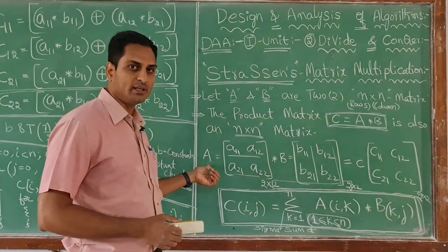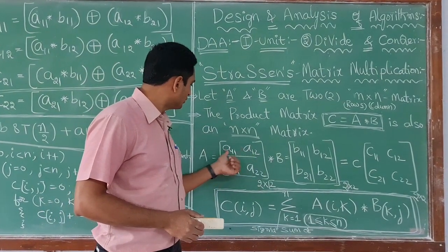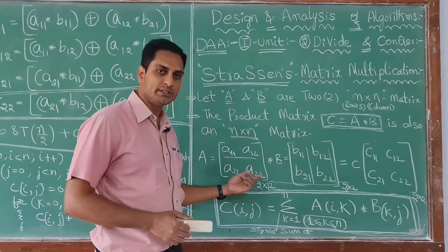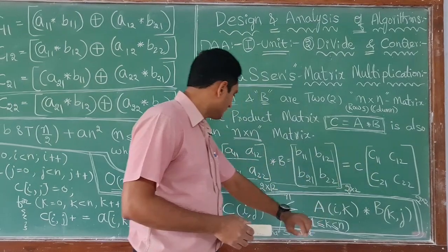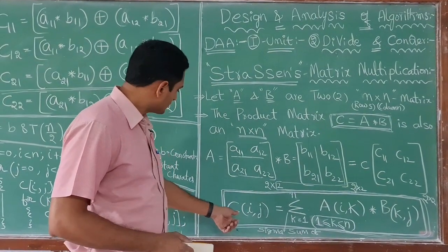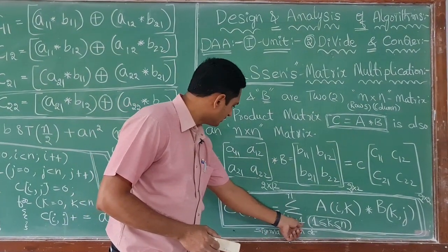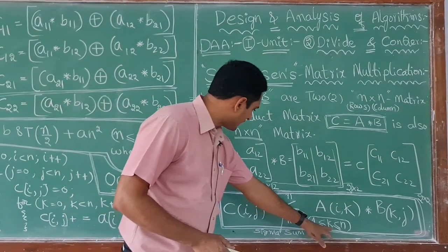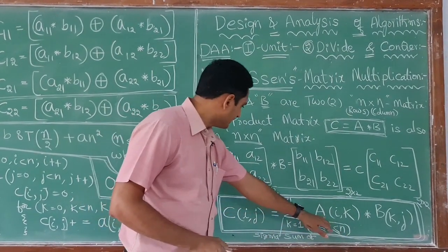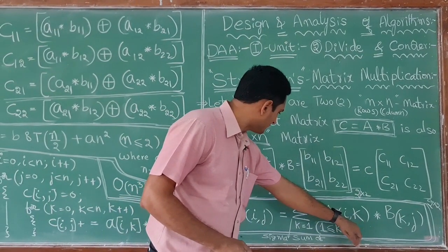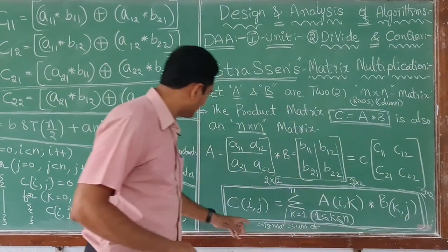Here A is equal to elements A(1,1), A(1,2), A(2,1), A(2,2), multiplied into matrix B, giving resultant matrix C. The formula is: C(i,j) = sigma (sum) from k=1 to n of A(i,k) into B(k,j), where k lies between 1 and n. The product of these two terms gives us the result by summation.